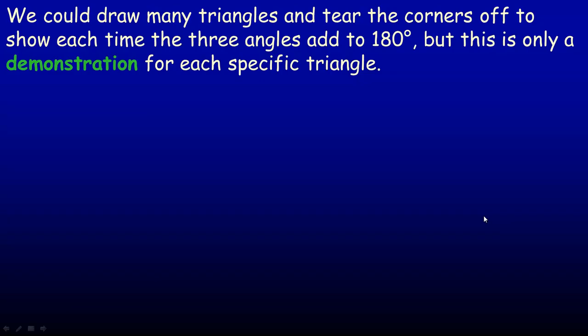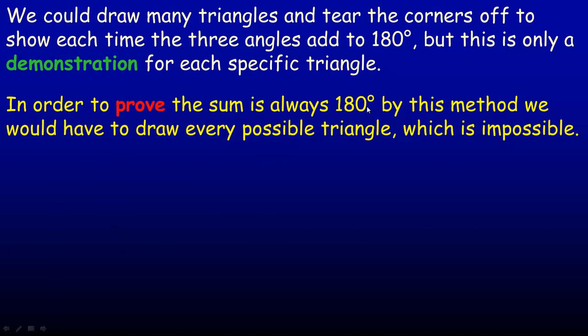We could draw many triangles and tear the corners off every single time, and in each case we'd find that the three angles always add to 180 degrees. But this is only a demonstration for each specific triangle — it's not a proof. To prove this way, we'd have to draw every possible triangle, which is impossible because there's an infinite number of triangles.